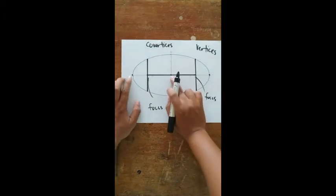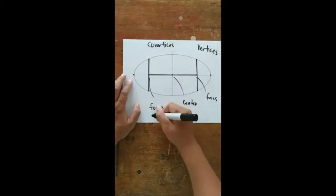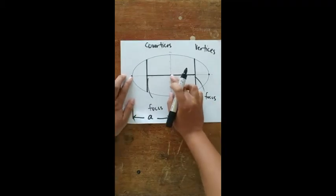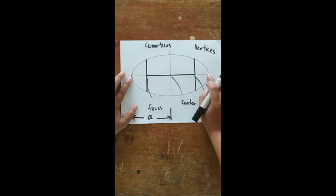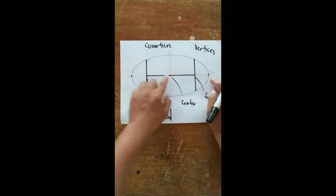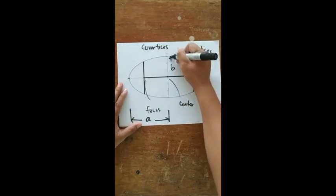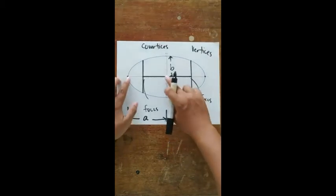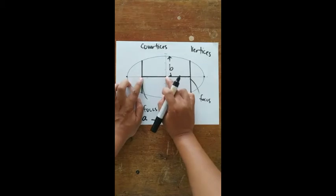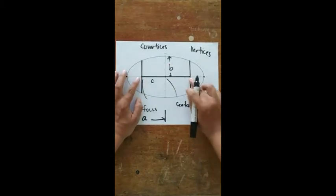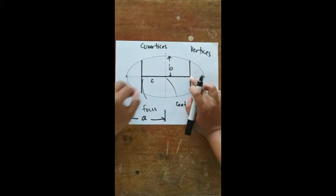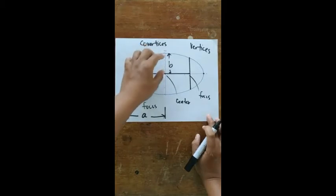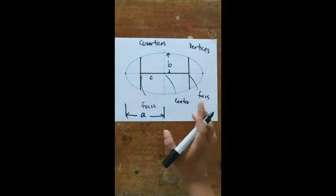The length from the center to one vertex is 'a', so the length between two vertices is 2a. The length from the center to a co-vertex is 'b', so the length between two co-vertices is 2b. The length from the center to a focus is 'c', so the principal axis length is 2c. Half of the major axis is called the semi-major axis (a) and half of the minor axis is the semi-minor axis (b).